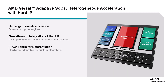The AMD Versal Adaptive SoC is a fully software-programmable, heterogeneous compute platform with hardened IPs. Built on 7nm technology, the Versal architecture combines the processing system (PS), which consists of dual-core ARM processors, and the programmable logic (PL) — the FPGA fabric — with domain-specific accelerators like AI engines, and connectivity provided by the programmable network on chip (NOC).